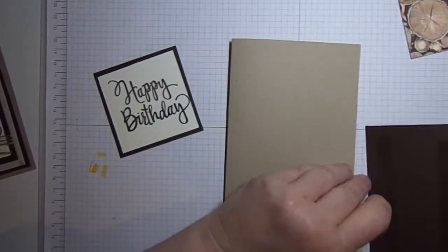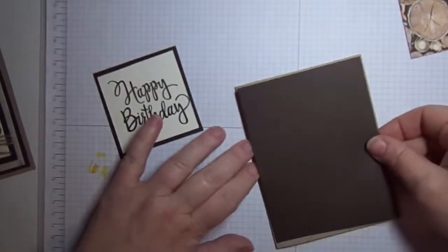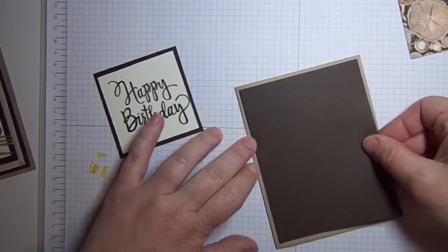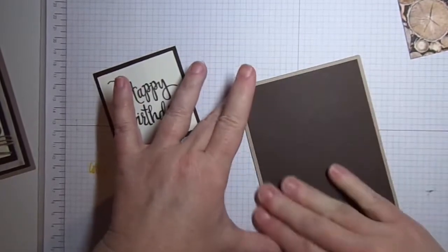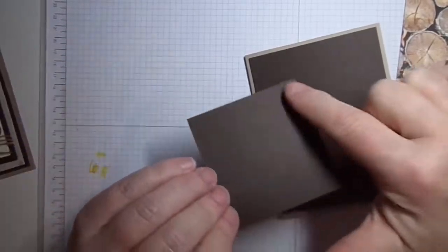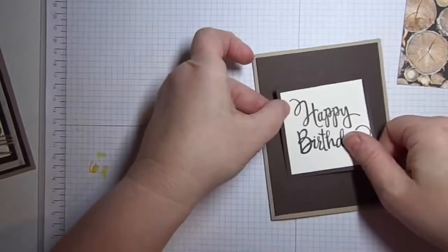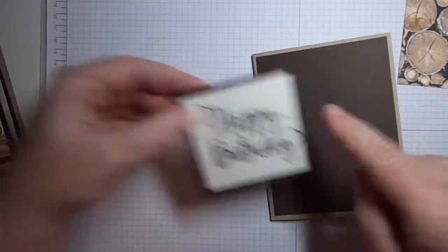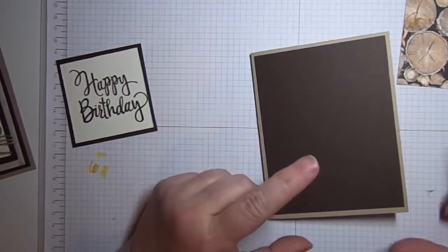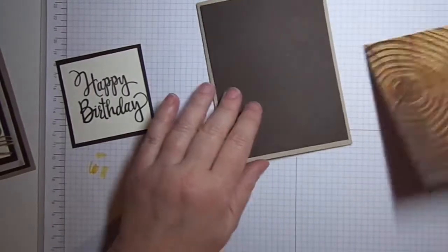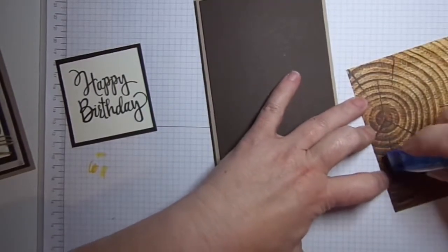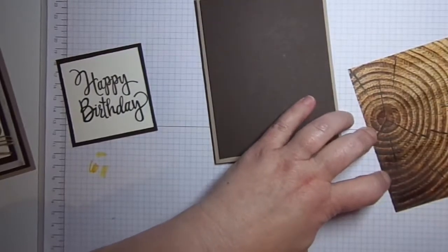A tip I want to tell you about to save yourself some paper: if you're doing a big base like this mat that you're going to cover up with something else, I could have used my framelits in my big shot to cut the square right out of this big piece. If you don't have a big shot and framelits, that might be a little more difficult, but it saves you a little bit of paper. But I just cut mine on the cutting board.